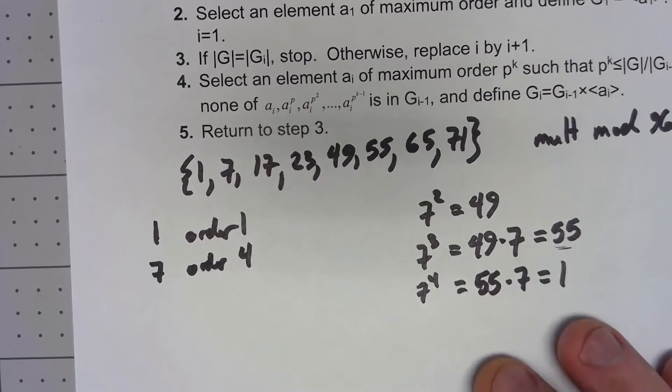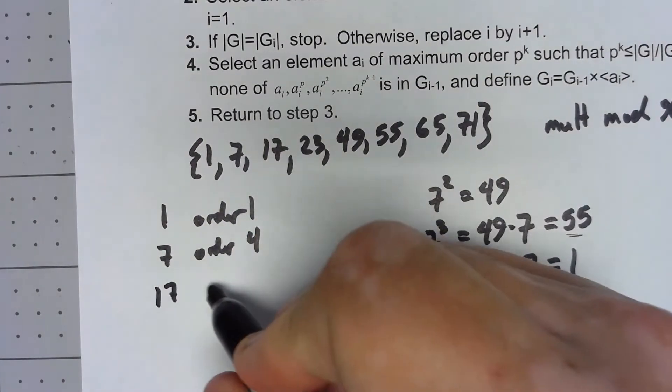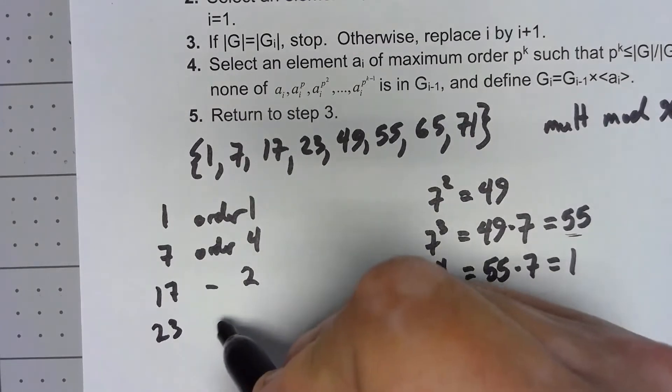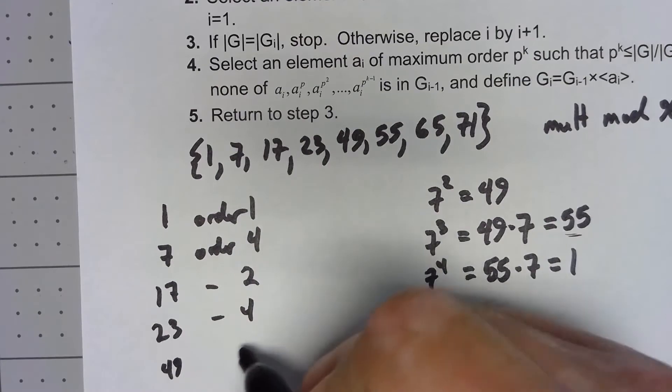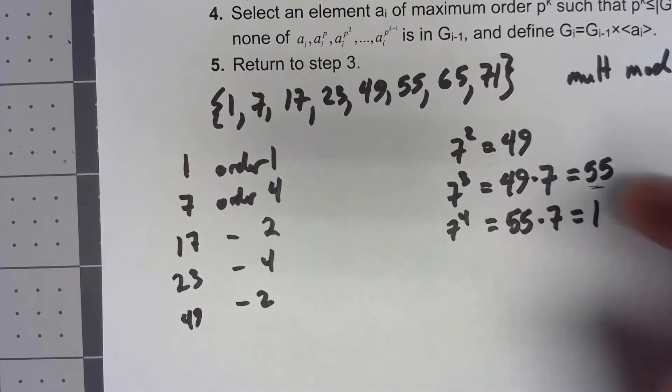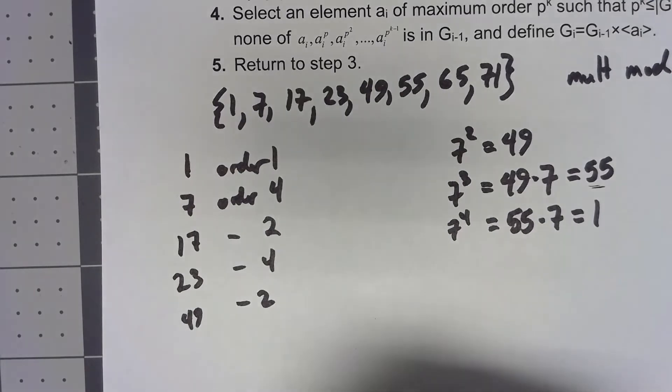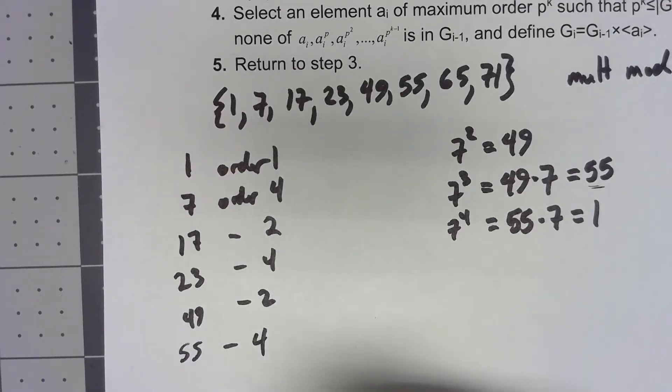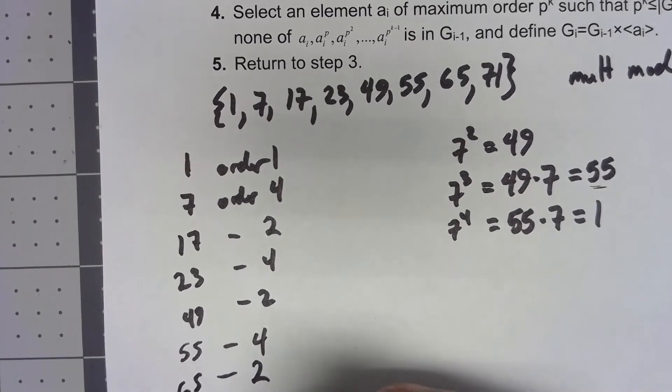I'm not going to compute all of these things but 17 has order 2, 23 has order 4, 49 has order 2, 55 has order 4, 65 has order 2, and 71 has order 4.